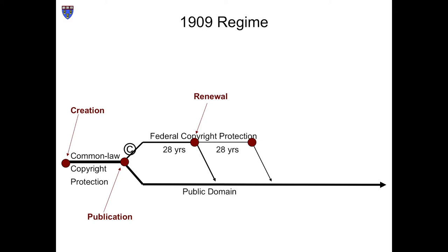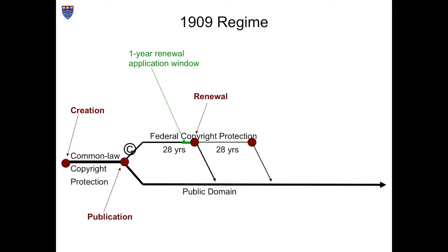Here are a few more details we have not yet discussed. The application for renewal could be filed any time during the year preceding the expiration of the initial term. If the author was still alive at that time, he or she was presumptively entitled to apply for and receive the renewed copyright. If the author had died, his or her surviving spouse or children could do so. If there were no surviving spouse or kids, the author's executor had the right. If the author had not left a will, then his or her next of kin had the renewal right.